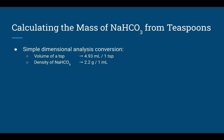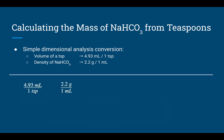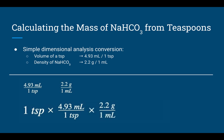Now we convert our teaspoon measurement into a usable lab value — grams of sodium bicarbonate. Using online research, there are 4.93 mL per teaspoon and a density of 2.2 g/mL for sodium bicarbonate. Writing these as conversion factors for dimensional analysis, we convert one teaspoon to milliliters and then milliliters to grams. My experiment has 10.9 grams of sodium bicarbonate available for the reaction.